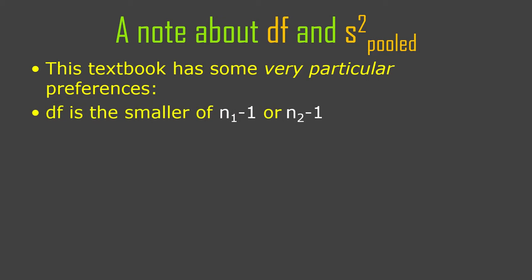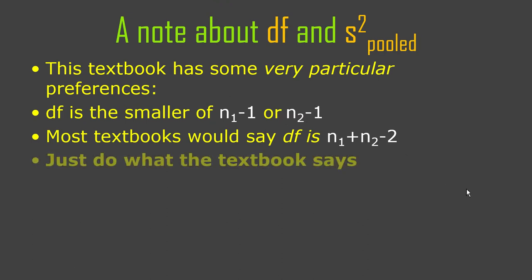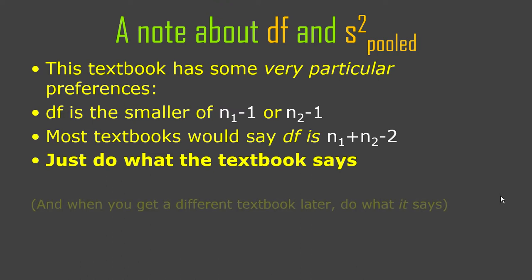Most textbooks would not say this is the degrees of freedom — they'd say n1 plus n2 minus 2. But that's for the pooled standard error. Our textbook is cautious about the pooled standard error and says don't use it unless you're absolutely sure about the conditions. Most textbooks say go ahead and use it unless there's a serious problem — like sample sizes are totally different or variances are very different. Just follow the formulas I'm giving you, and when someone gives you a different textbook, follow their formulas.